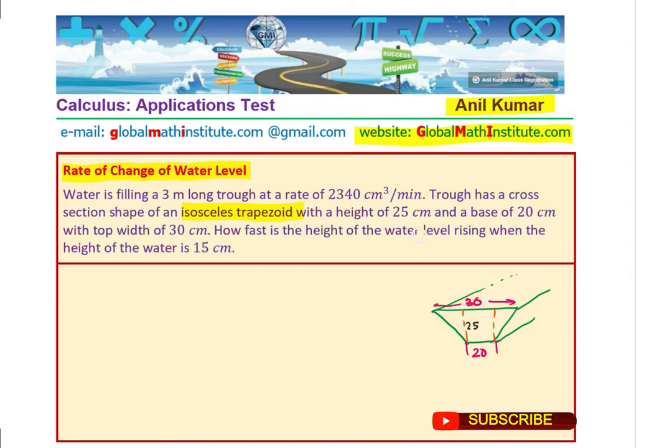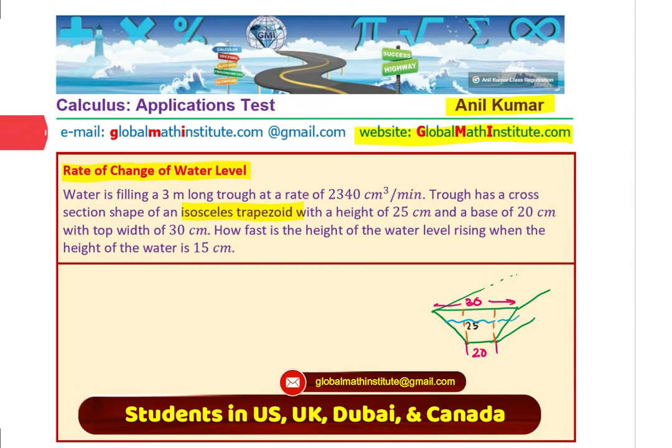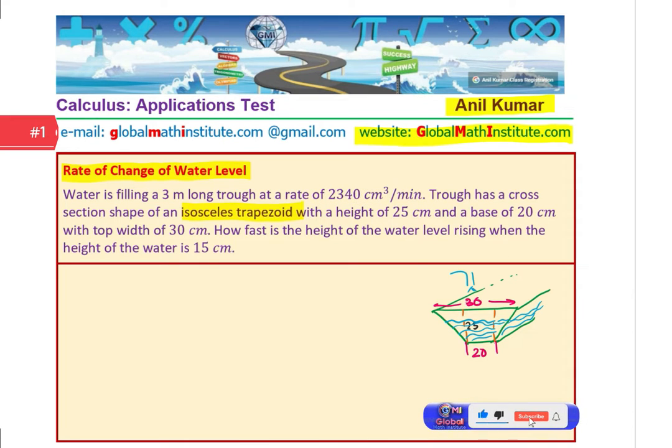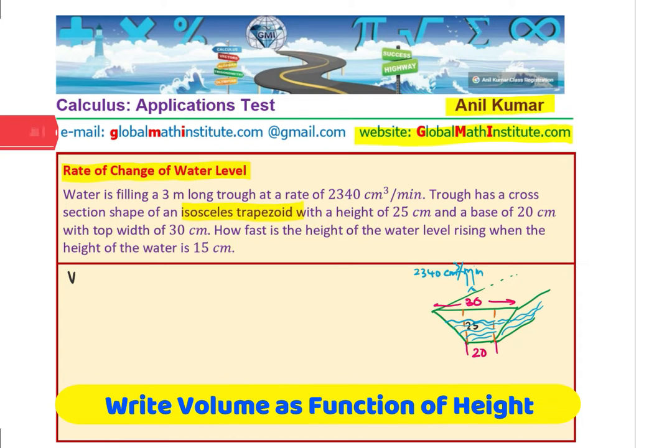We need to find how fast is the height of water level rising when the height of the water is 15 cm. How fast is this water level rising? That is what we need to figure out. It is being filled at a given rate of 2340 cm cube per minute. That is the rate of change of volume dV/dt with time, which is 2340 cubic centimeters per minute.